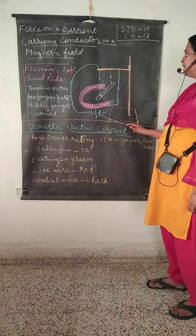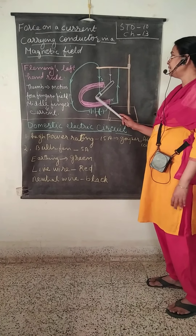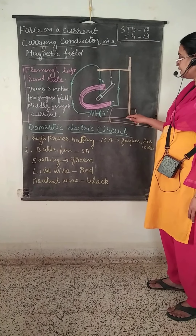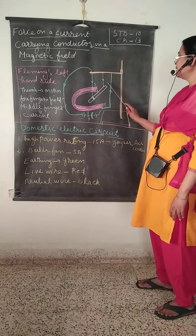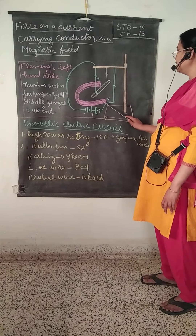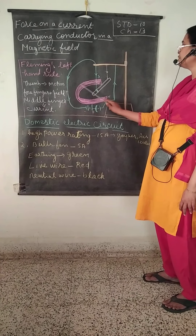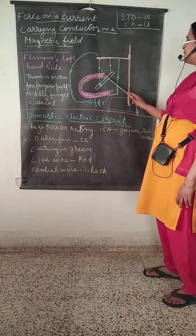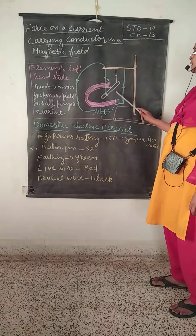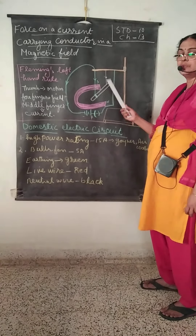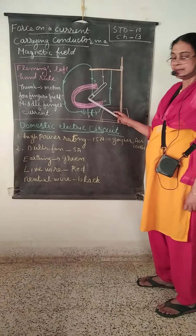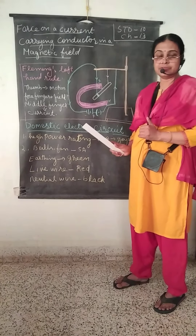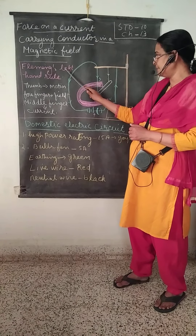When you press the key, electricity passes through it and a force is produced, causing the rod to move to the left-hand side. When you reverse the current, it moves to the right-hand side. This shows that by passing electricity and using the magnetic field with the help of this magnet, force acts on the conductor. This direction of force, magnetic field, and current can be explained by Fleming's left-hand rule.